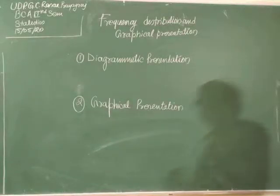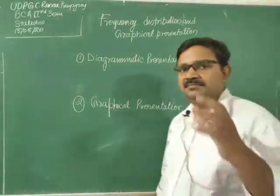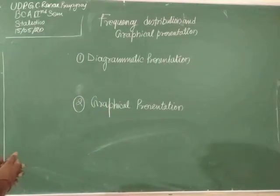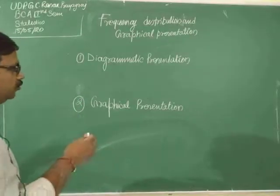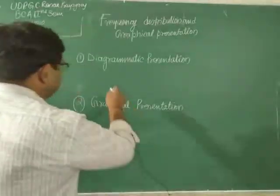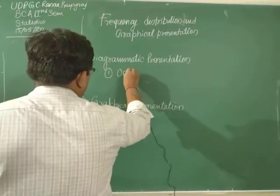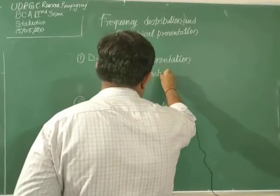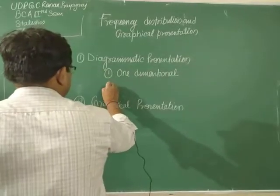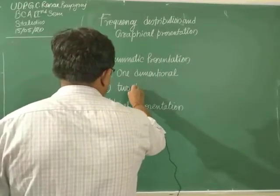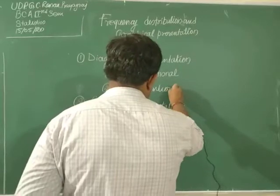In diagrammatic presentation, we show all data in bar form. There are two ways to display statistics data in pictorial form: one is one-dimensional, and the second is two-dimensional.